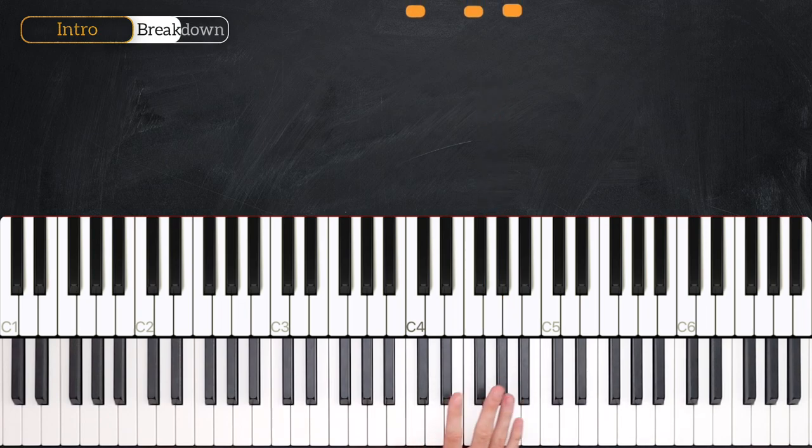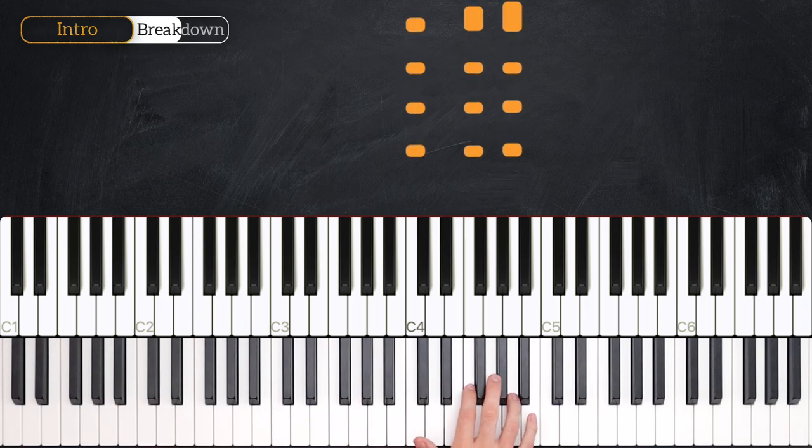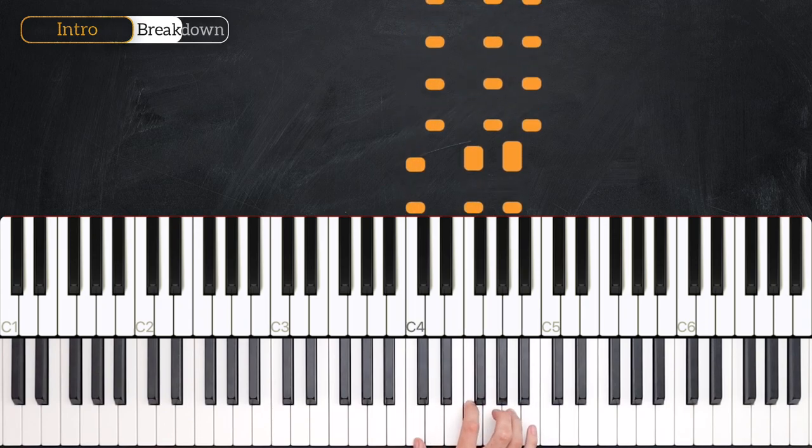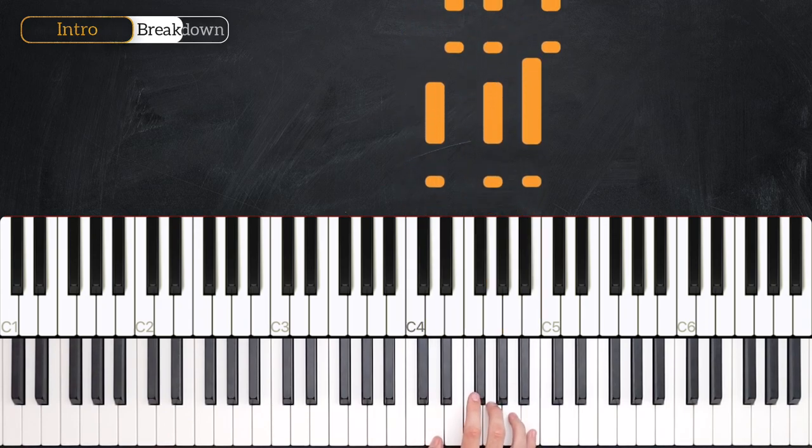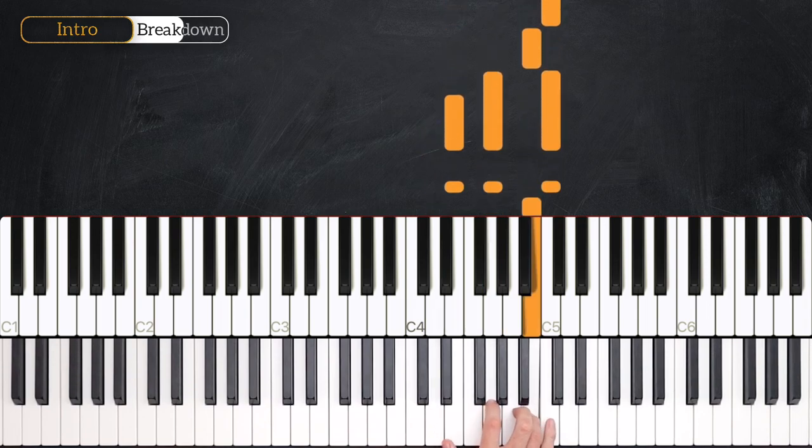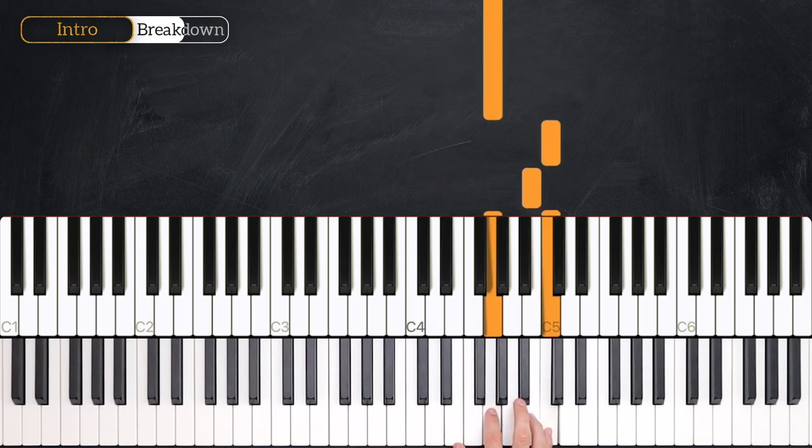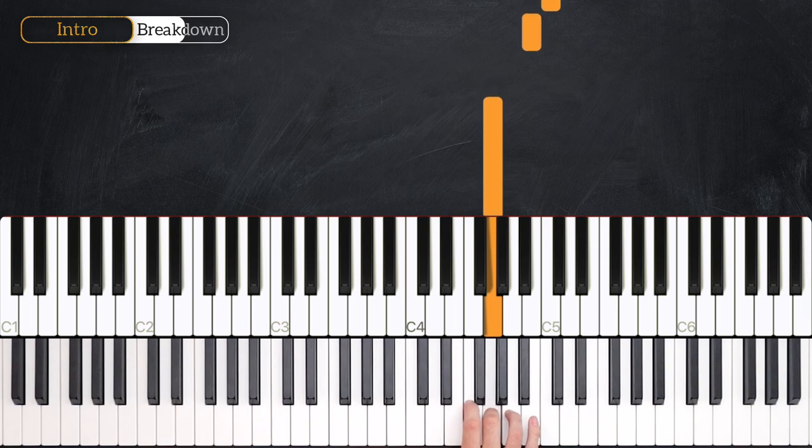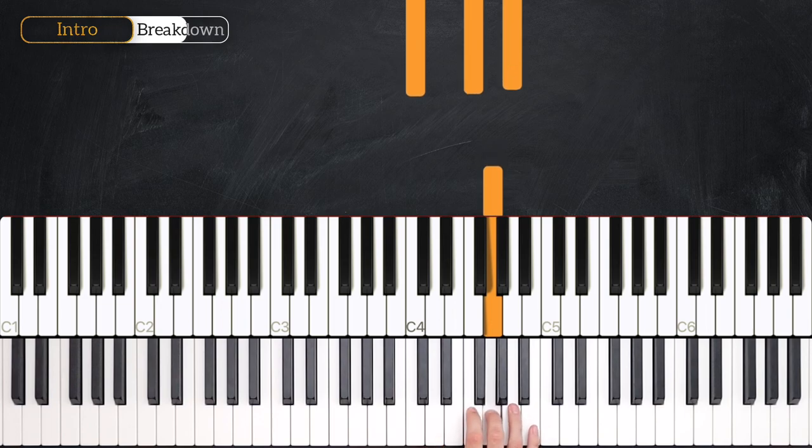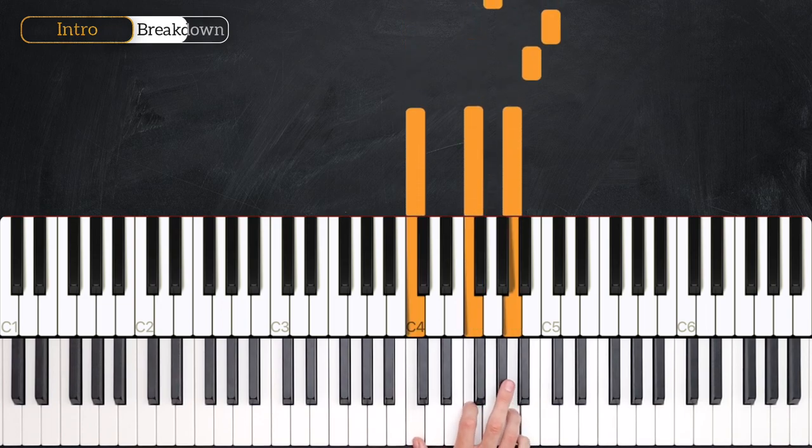So here's the whole sequence, and this is a two bar sequence in total. One and two and three and four and one and two, three and four. So notice that I'm finishing this with my middle finger, in order to start the phrase again smoothly.